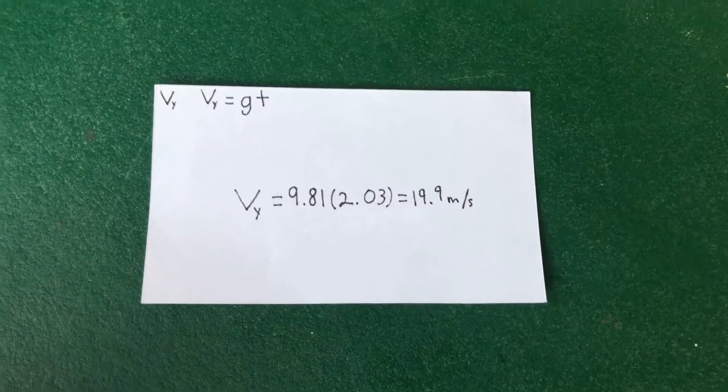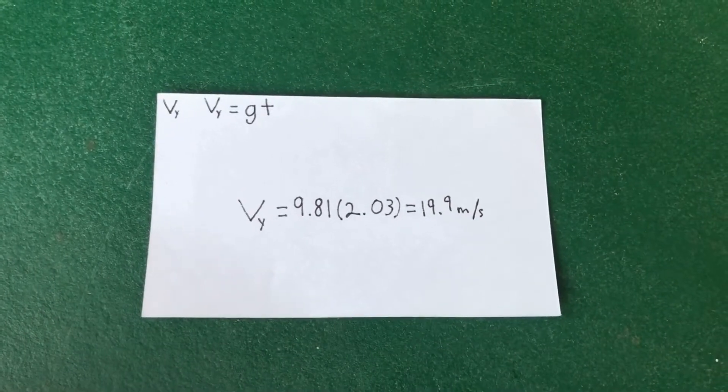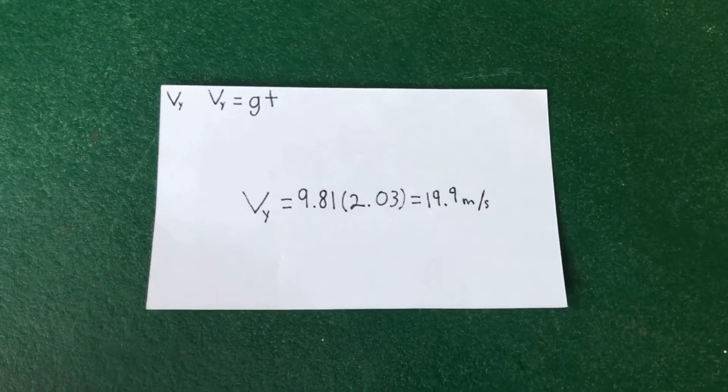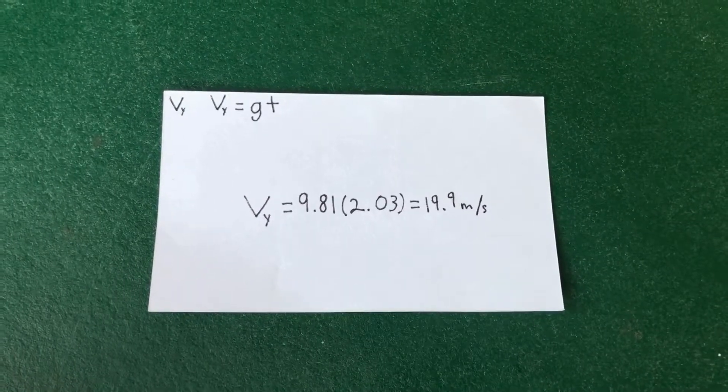To find vertical velocity, we used the equation Vy equals Gt. We then plugged in gravity, which is a constant of 9.81 meters per second squared, and our time was 2.03 seconds, and we got a vertical velocity of 19.9 meters per second.